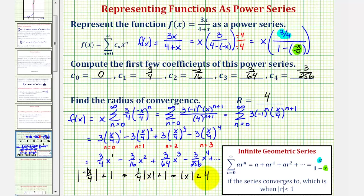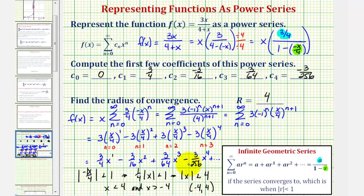If we want the interval of convergence, we solve to get x is less than 4 and x is greater than negative 4, which is the open interval from negative 4 to positive 4. The interval is centered at 0 with a radius of 4.